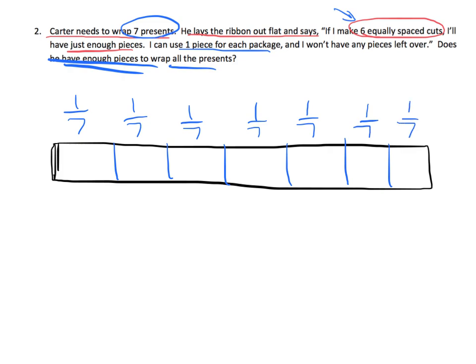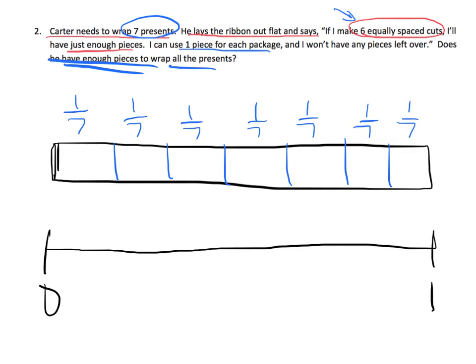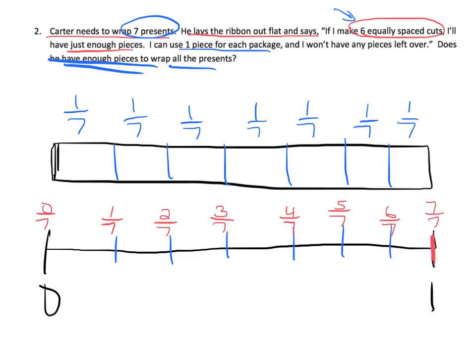It doesn't say I was supposed to do this, but I'm going to connect this to a number line anyway. Here's zero, here's one. These lines tell me where to draw my intervals. Zero-sevenths, one-seventh, two-sevenths, three-sevenths, four-sevenths, five-sevenths, six-sevenths, and seven-sevenths. Students are going to eventually start seeing that seven-sevenths equals one whole.